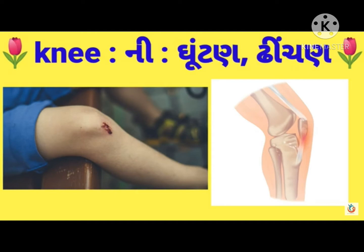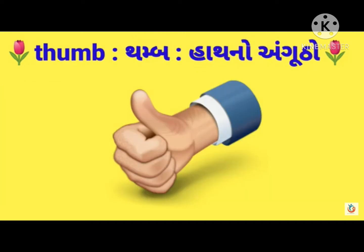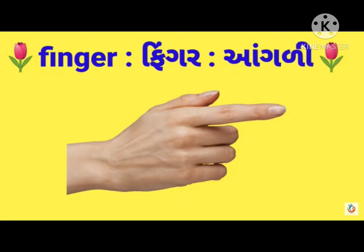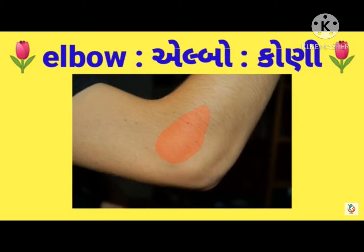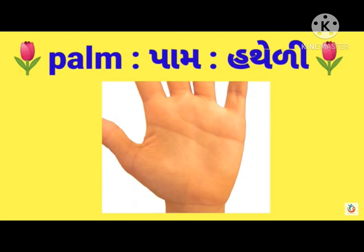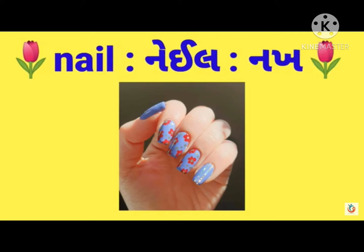Knee — guta. Thumb — anggutho. Finger — angri. Elbow — koni. Palm — hathari. Nail — nakh.